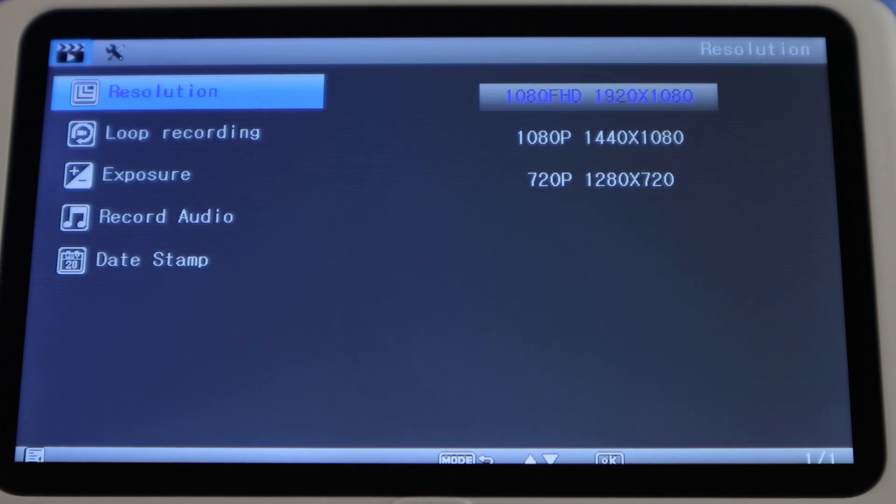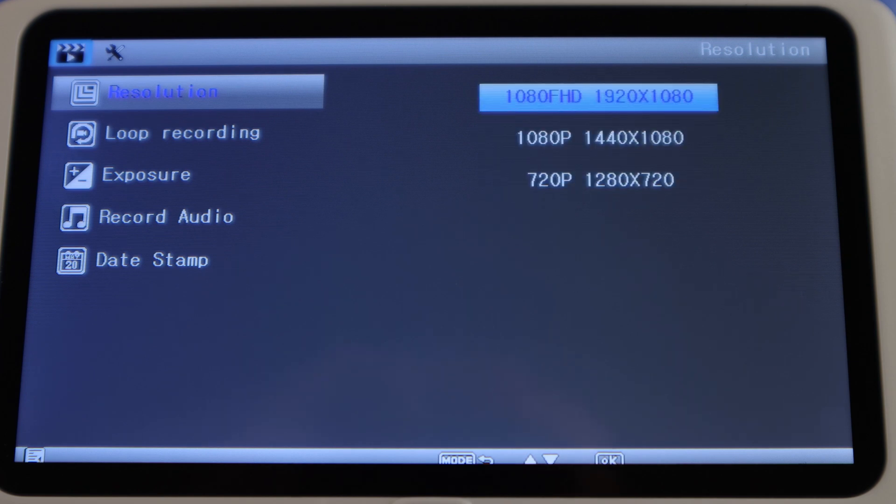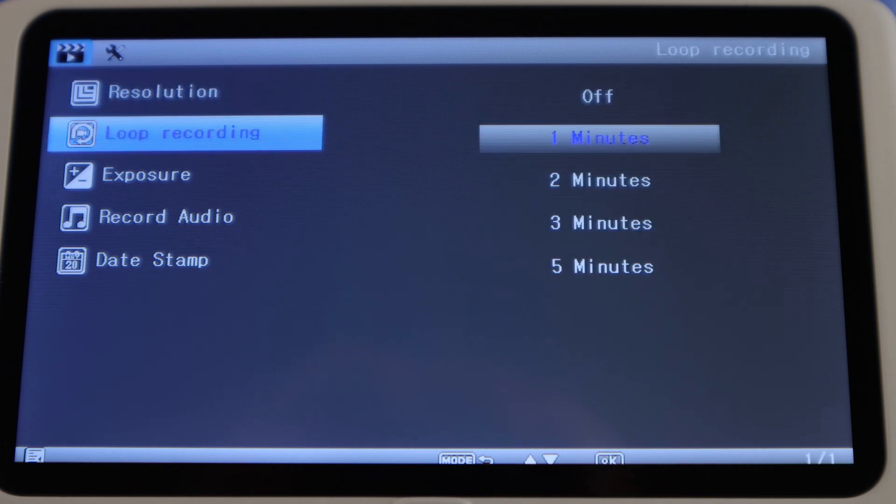In the video settings, you can change the video resolution with 1080p 1920x1080 being the highest resolution. Set loop recording length, which automatically divides your video recordings into clips.